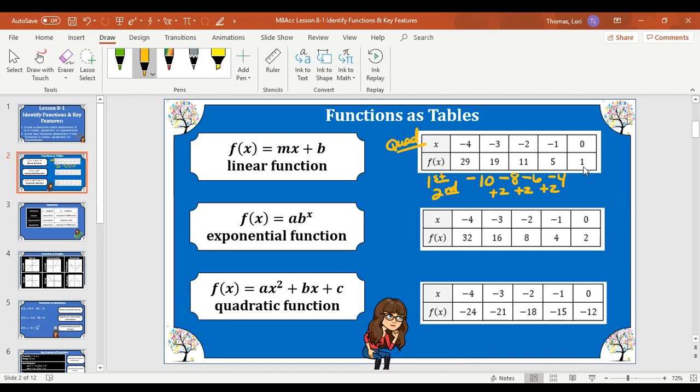And all the patterns that we get from our outputs is going to tell us some part of our equation. So the second difference helps us determine the a value of our quadratic. Our second difference, which is 2 in this case, once we divide it by 2, this gives us our a value. So our a value is 1.